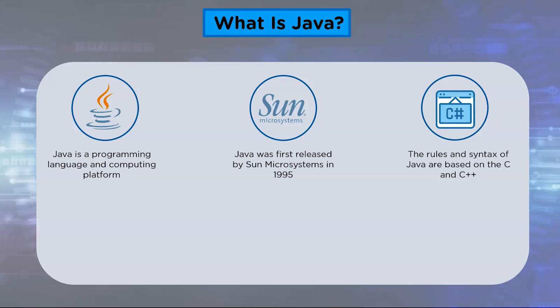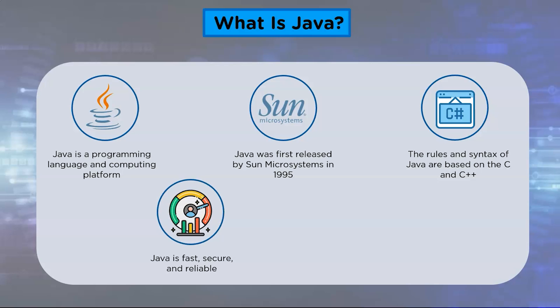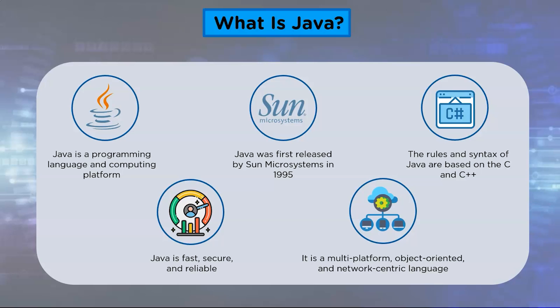Java is a widely used object-oriented programming language. The rules and syntax of Java are based on the C and C++ languages. Java is fast, secure, and reliable. From laptops to data centers, game consoles to scientific supercomputers, cell phones to the internet, Java is everywhere. Java is a multi-platform, object-oriented, and network-centric language, and it is among the most used programming languages.